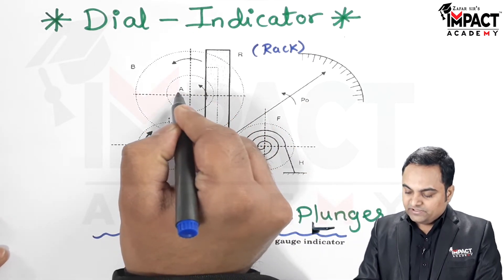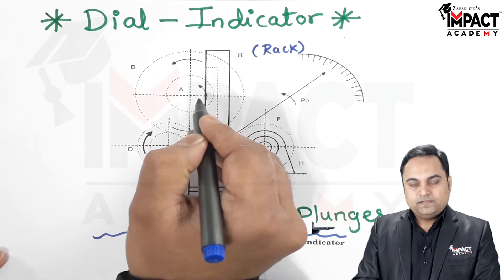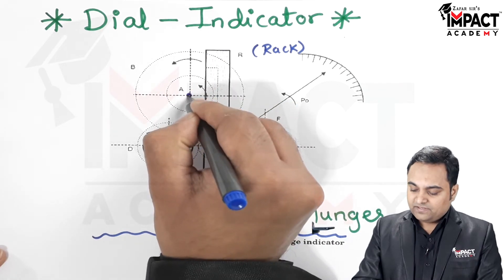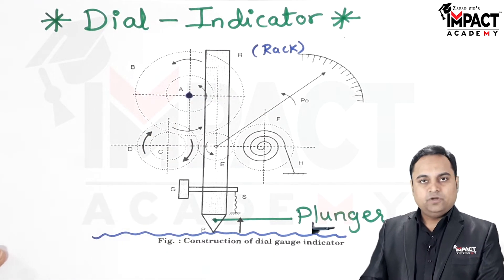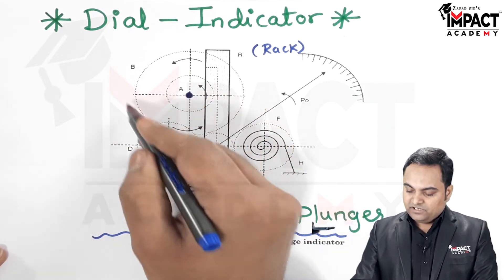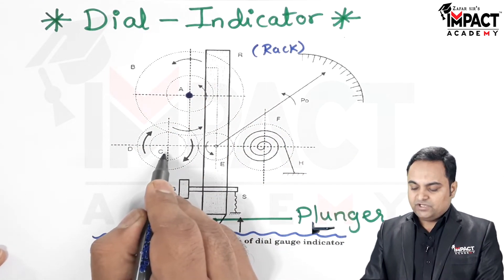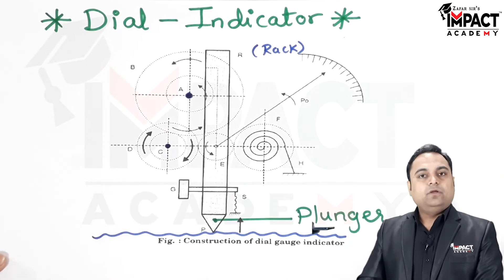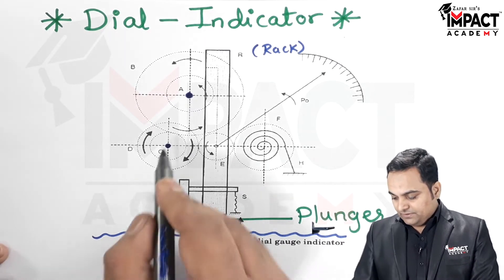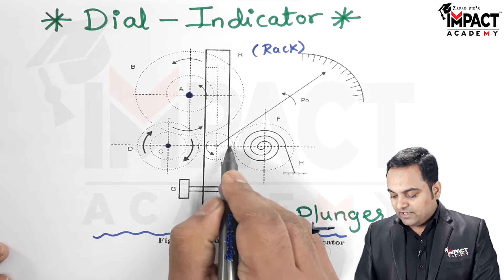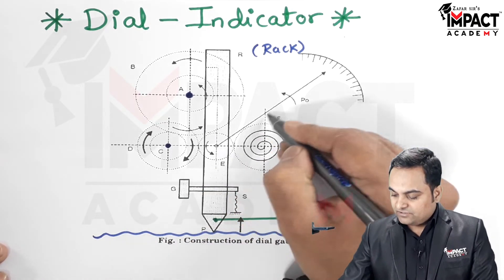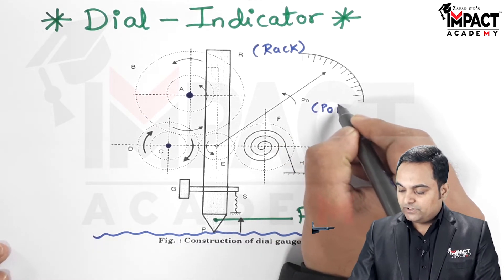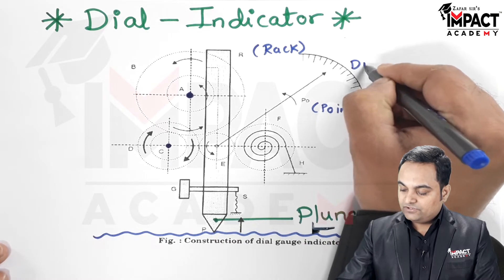With the rack there is gear A, which is in mesh with the rack. Gear A and gear B are mounted on the same shaft, as seen in the diagram. Gear B, which is a bigger gear, is in mesh with gear C, and gear C and gear D are mounted on the same shaft so their rotation is the same. D is in mesh with gear E, and E carries the pointer, denoted by PO — that is the pointer on the dial of the dial indicator.